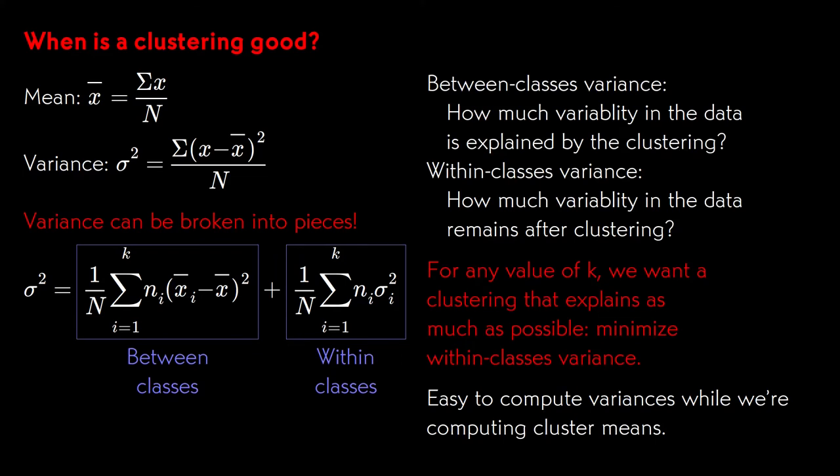This gives us a score that we can use to compare two divisions into the same number of clusters. Which one has the greatest between classes variance, or equivalently the smallest within classes variance? Which one explains more of the variability of the data, or equivalently, which one has the tighter clusters. It's easy to compute this score while we're computing the cluster means in the k-means algorithm.